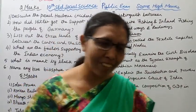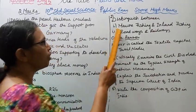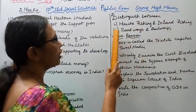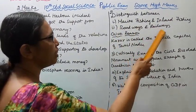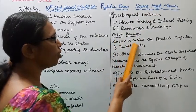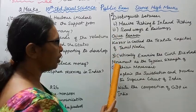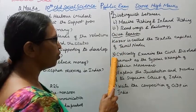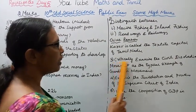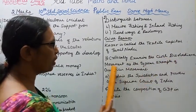Practice these questions: distinguish between marine fishing and inland fishing. Second, roadways and railways — give three reasons. Third, Karur is called the textile capital of Tamil Nadu.